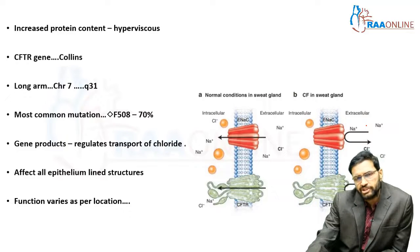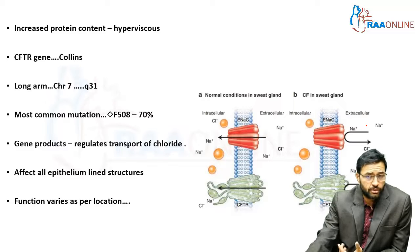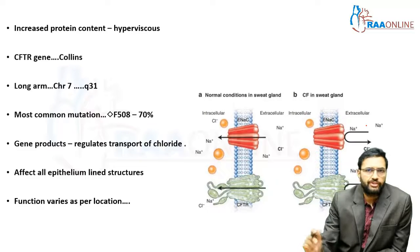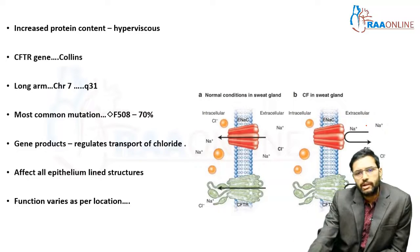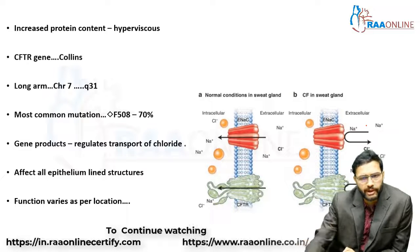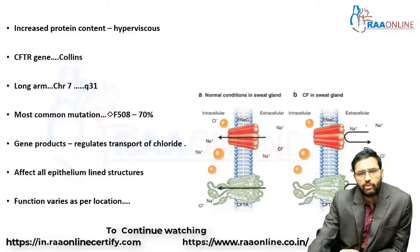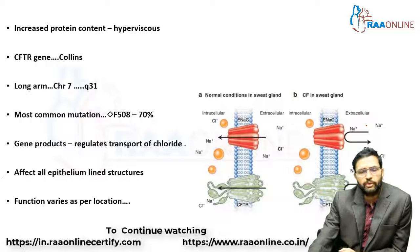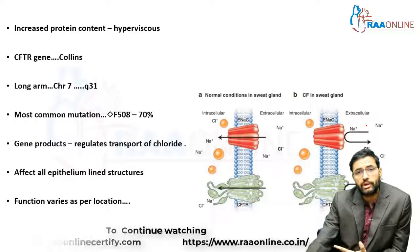The CFTR gene has functions which vary based on its location. For example, in the sweat gland, it is responsible for the absorption of sodium and chloride. In meconium ileus, this absorption of sodium and chloride is affected, and more sodium and chloride is excreted out in the sweat.